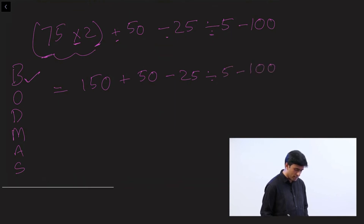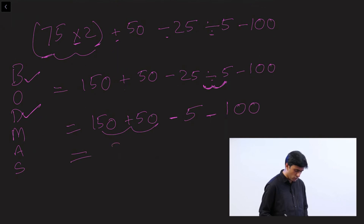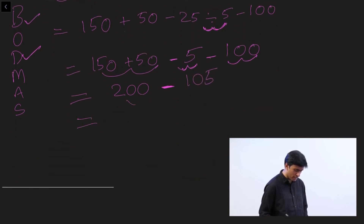The remaining operators are addition, subtraction, and division. D comes first, so solve 25 ÷ 5 = 5. That gives 150 + 50 − 5 − 100. Now do addition: 150 + 50 = 200. Then two minuses: −5 − 100 = −105. Finally, 200 − 105 = 95. That's the answer.